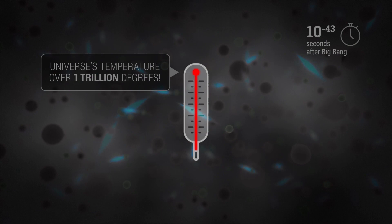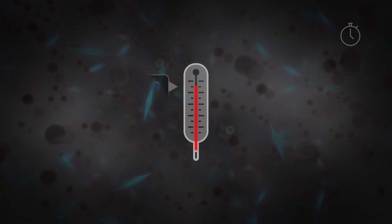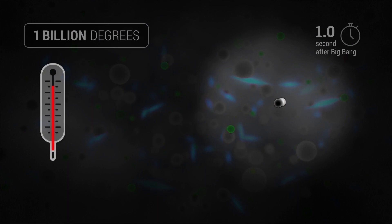No atoms could form because matter particles were traveling too fast to stay together. But as the universe expanded, it became less dense and it cooled. The particles slowed down.